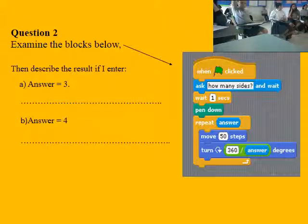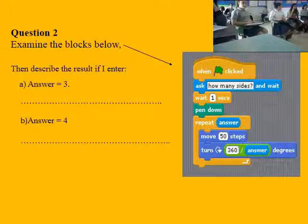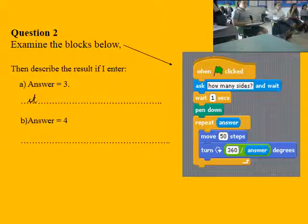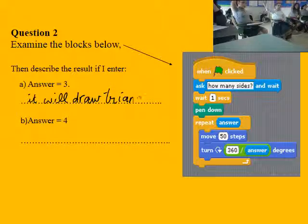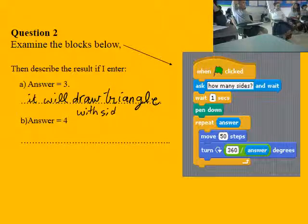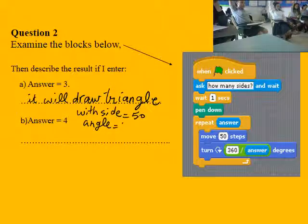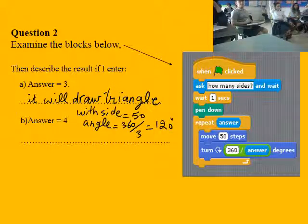Try it. It will draw a triangle with side equal 50 and angle 360 over three equals 120 degrees. So the angle is equal to 120 degrees.